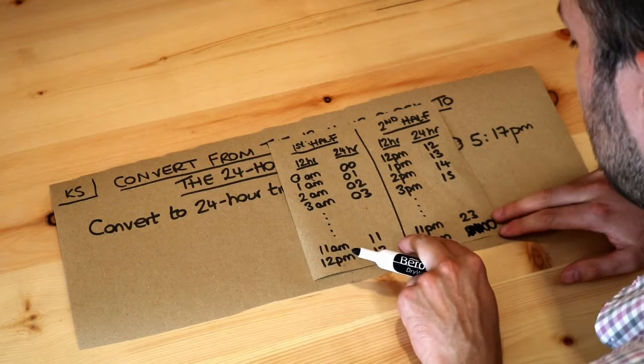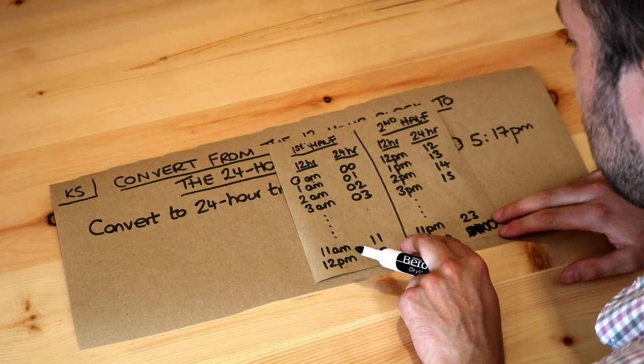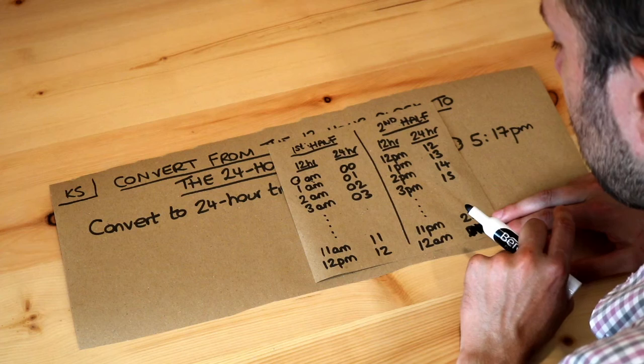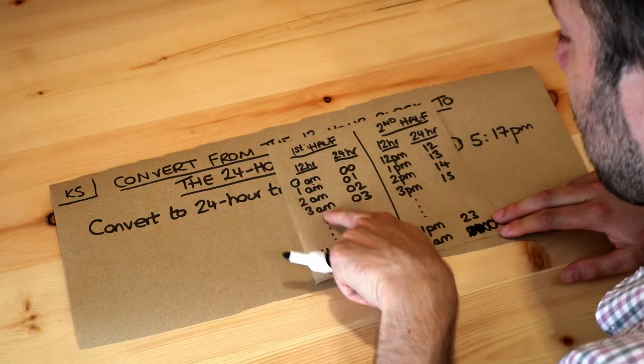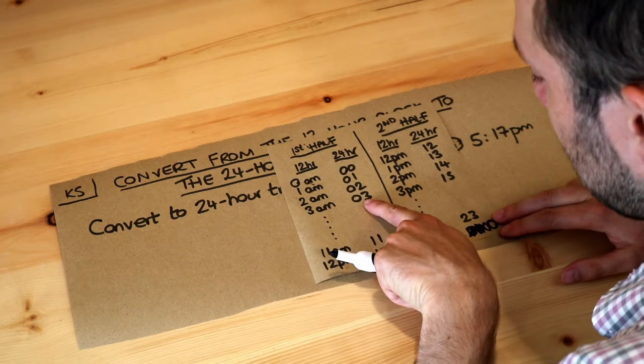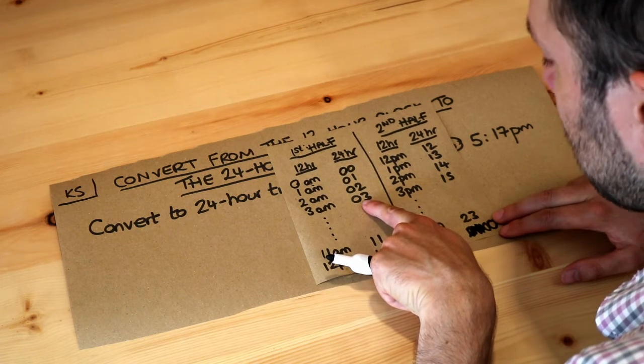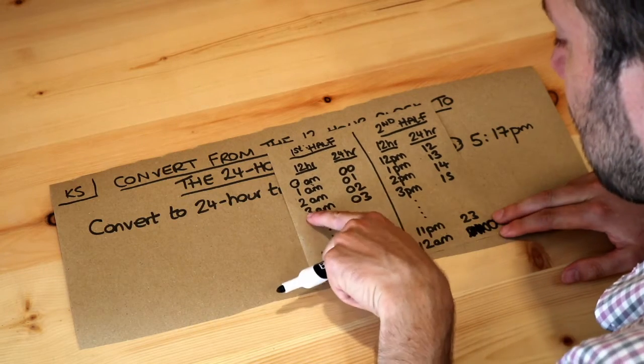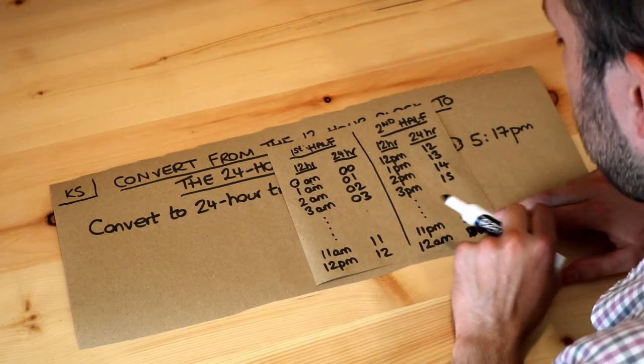You might be able to notice how to get from a time on the 12-hour clock to the 24-hour clock. If it's in the morning, so AM, then it's easy because we just use the same number but make sure there's a zero on the end. Notice 24-hour times don't have AM or PM on the end. The three stays as three but with just a zero on the end.